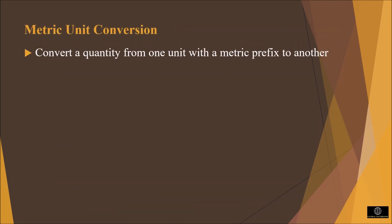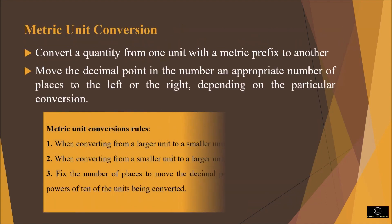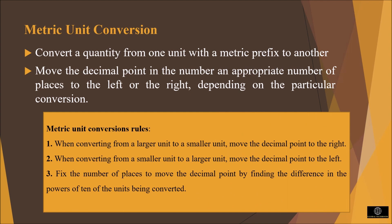Metric unit conversion. Sometimes we need to convert a quantity from one unit with a metric prefix to another, such as from milliampere to microampere. For this conversion, we move the decimal point an appropriate number of places to the left or right depending on the particular conversion. When converting from a larger unit to a smaller unit, move the decimal point to the right. When converting from a smaller unit to a larger unit, move the decimal point to the left.